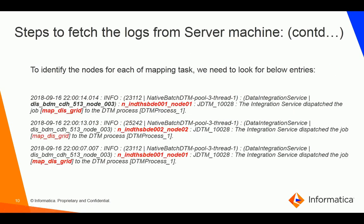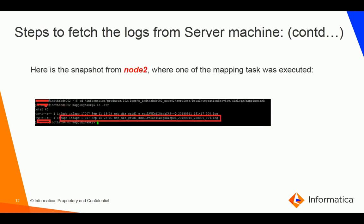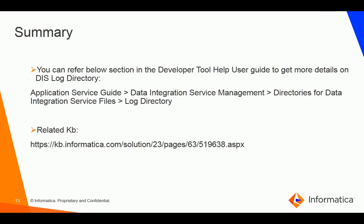This covers everything I just showed you — using the DIS log and the server machine snapshots to find logs for both the workflow and the mapping tasks. You can always refer to the application guide's logs directory section to learn more about the logging options for DIS. This KB article is also a reference for a scenario where a user was unable to fetch logs when the DIS was running on a grid. Thank you for listening, and we would be grateful for any feedback.